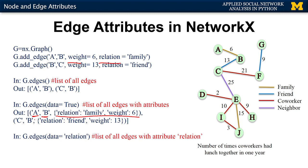If you only wanted information about the edges for a particular attribute, you can say `data='relation'` for example, and now you would get triplets containing the two nodes and the value of the relation attribute. So in this case, edge a-b would have 'family' and edge b-c would have 'friend'.